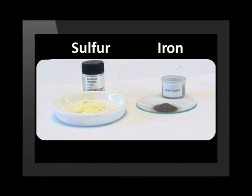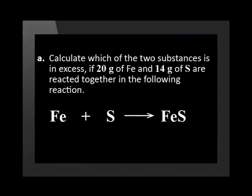Chemical equations and the use of the mole ratio in the equation can help us determine which substance is the limiting reagent and which is the substance in excess. Let us take this reaction between iron and sulfur as an example and do a calculation problem. Part A of the question says: calculate which of the two substances is in excess if 20 grams of iron and 14 grams of sulfur are reacted together in the following reaction.